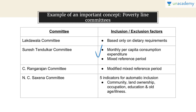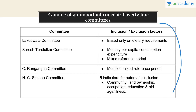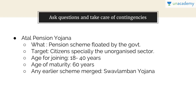A table covering poverty committees: Lakadawala Committee, Tendulkar Committee, Rangarajan Committee, and Saxena Committee. Lakadawala is based on dietary requirements; Tendulkar uses monthly per capita consumption with mixed reference period; Rangarajan uses modified mixed reference period; Saxena has five indicators — community, land ownership, occupation, education, and old age and illness. Just remembering this table will be very beneficial.